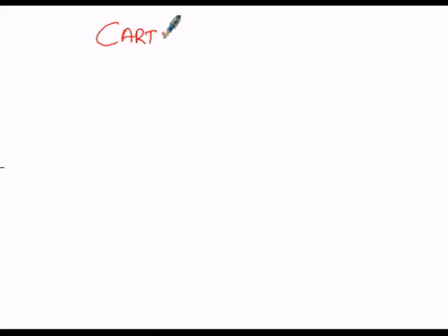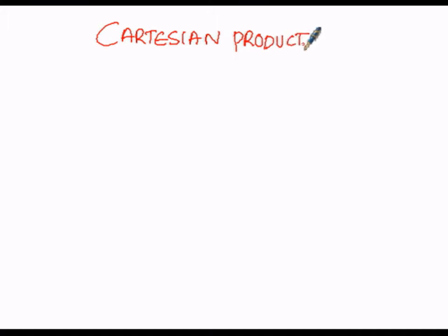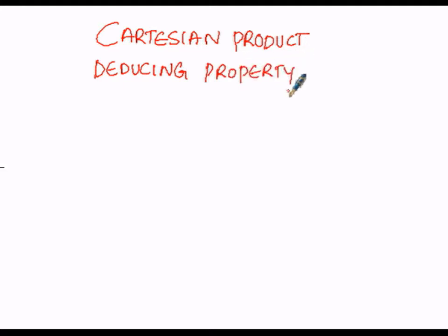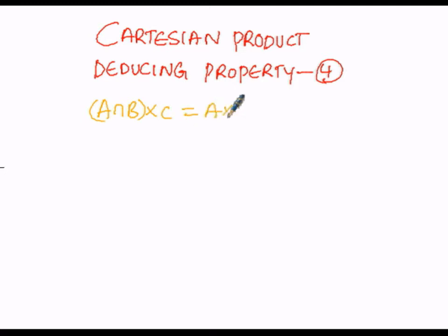Cartesian product. Under Cartesian product, we are going to deduce property number 4, which is: A intersection B cross C equals A cross C intersection B cross C. We are going to deduce this condition at the advanced level.